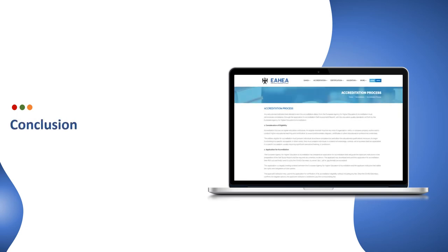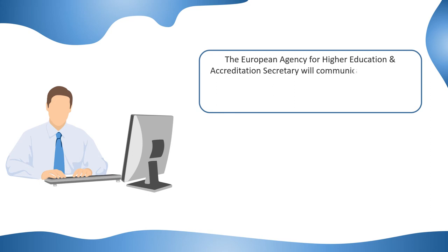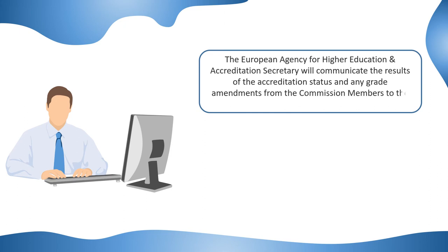Conclusion. The European Agency for Higher Education and Accreditation secretary will communicate the results of the accreditation status and any grades of the application. The President will review the accreditation report to resolve any discrepancies that may have occurred during the standards grading. The final grades of the accreditation report are endorsed by the President of the European Agency for Higher Education and Accreditation.